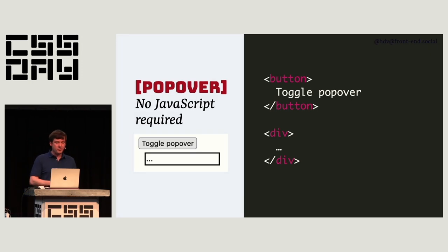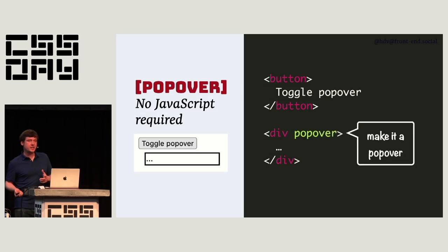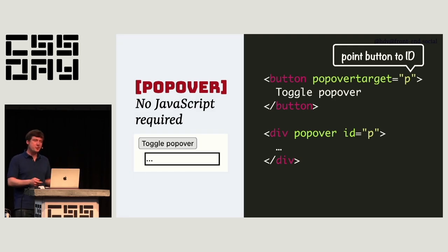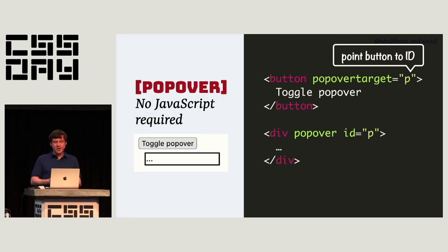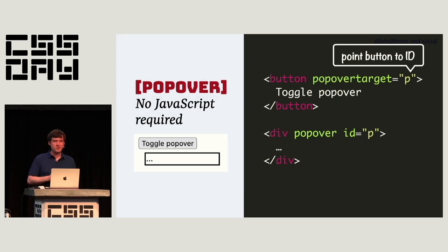One thing I'm really excited about with popover is that it doesn't require JavaScript in its setup. If you have a button and a div, you make the div a popover by applying the popover attribute to it. Then when you add an ID and point to it from the popovertarget attribute on the button, the button will toggle the popover — you don't need any JavaScript for that part. I think that's very powerful. We had something like that with details and summary before, but this one is actually meant for popovers and has very useful behaviors.